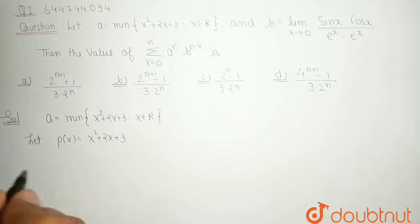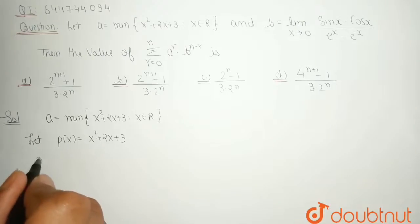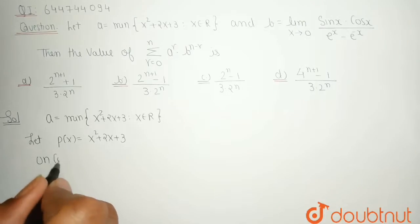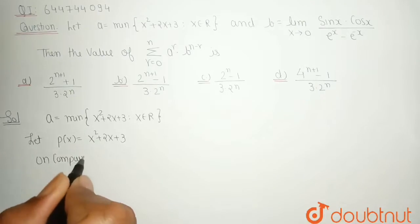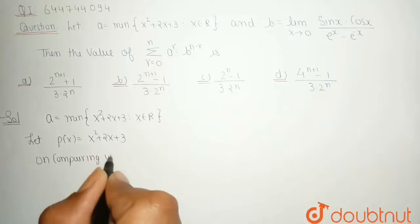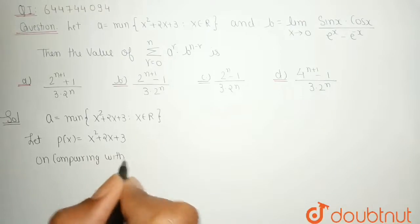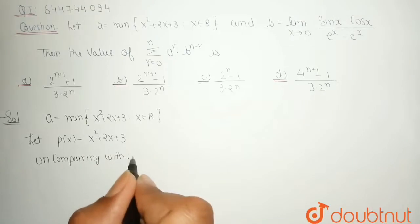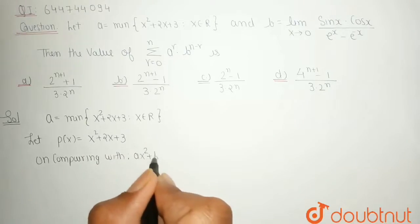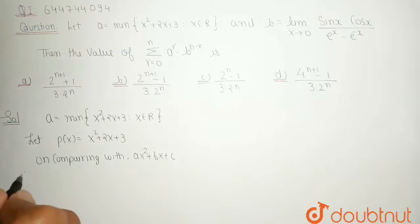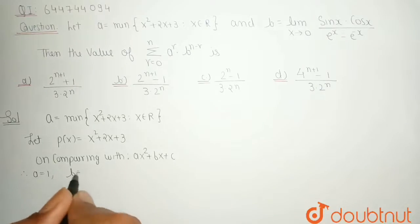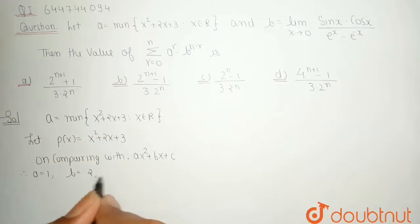Comparing with the standard form ax² + bx + c, we get a = 1, b = 2, and c = 3.